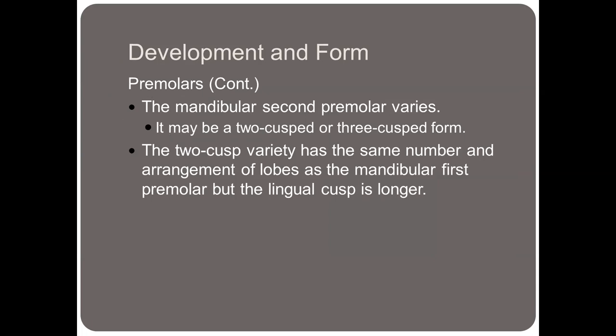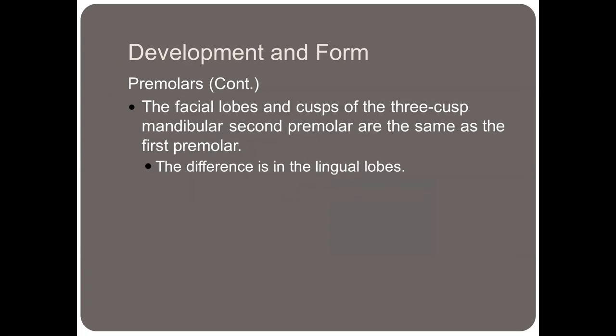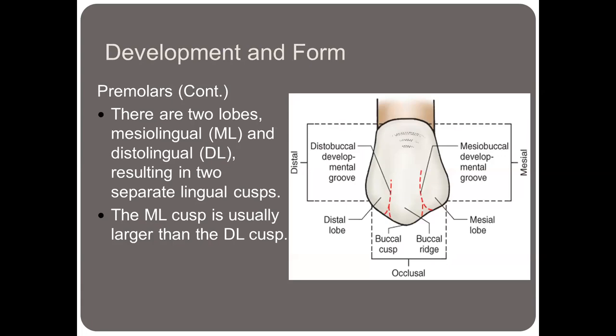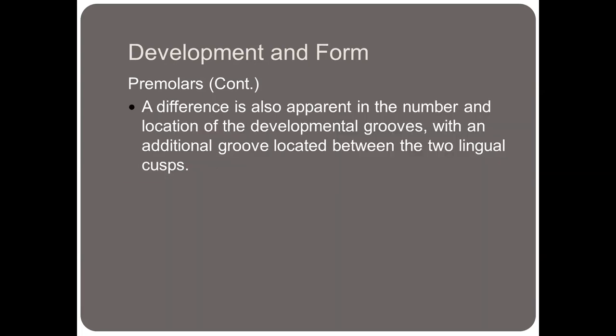The mandibular second premolar varies — it can have two cusps or three cusps, which is why we no longer call these teeth bicuspids. The two-cusp variety has the same number and arrangement of lobes as the mandibular first premolar, but the lingual cusp is longer. The facial lobes and cusps of the three-cusp mandibular second premolar are the same as the first premolar; the only difference is in the lingual lobes, where there are two: mesiolingual and distolingual, resulting in two separate lingual cusps. The mesiolingual cusp is usually larger than the distolingual cusp — the mesial is generally larger than the distal, and the buccal is bigger than the lingual. The difference is also apparent in the number and location of developmental grooves, with an additional groove between the two lingual cusps.